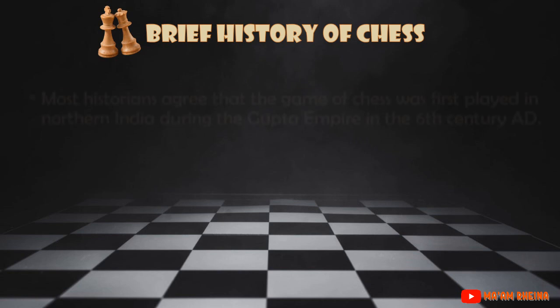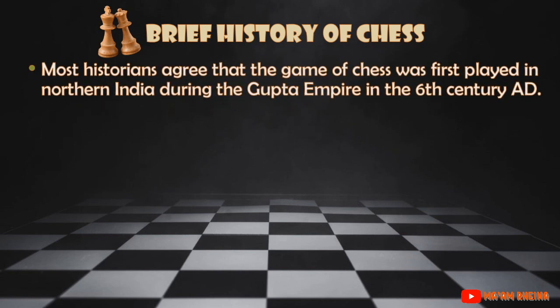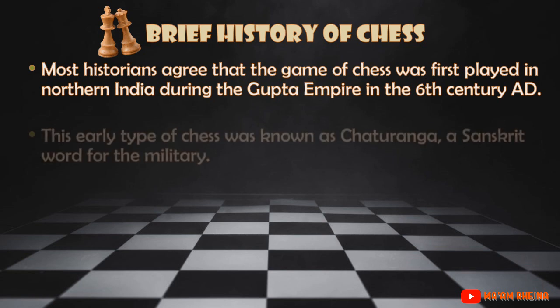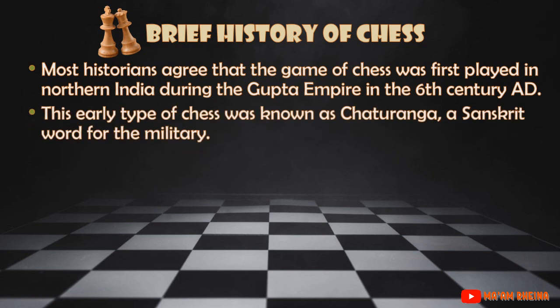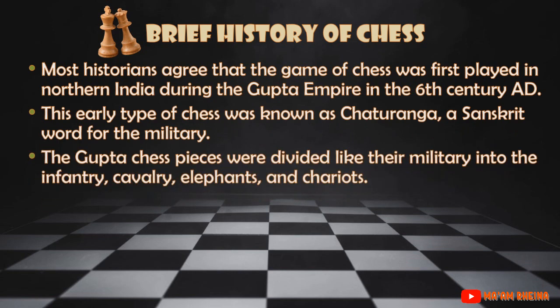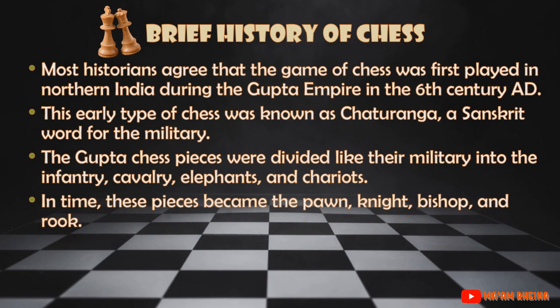A brief history of chess: most historians agree that the game of chess was first played in Northern India during the Gupta Empire in the 6th century AD. This early type of chess was known as Chaturanga, a Sanskrit word for the military. The Gupta chess pieces were divided like their military into the infantry, cavalry, elephants, and chariots. In time, these pieces became the pawn, knight, bishop, and rook.